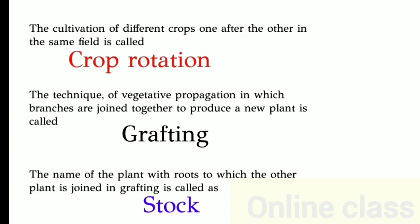The technique of vegetative propagation in which branches are joined together to produce a new plant is called grafting. The name of the plant with roots to which the other plant is joined in grafting is called stock.